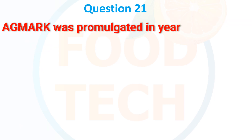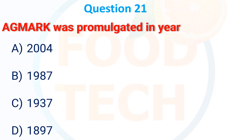Agmark was promulgated in year: A. 2004, B. 1987, C. 1937, D. 1897. The answer is 1937.